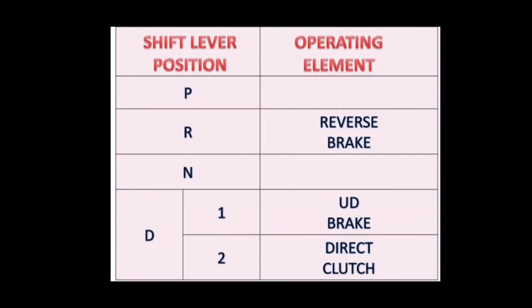In P position, any clutch or brake will not engage. In reverse position, the reverse brake engages. In neutral position, any clutch or brake will not engage. In D position, there are two speeds: in first speed, the UD brake engages; in second speed, the direct clutch engages.